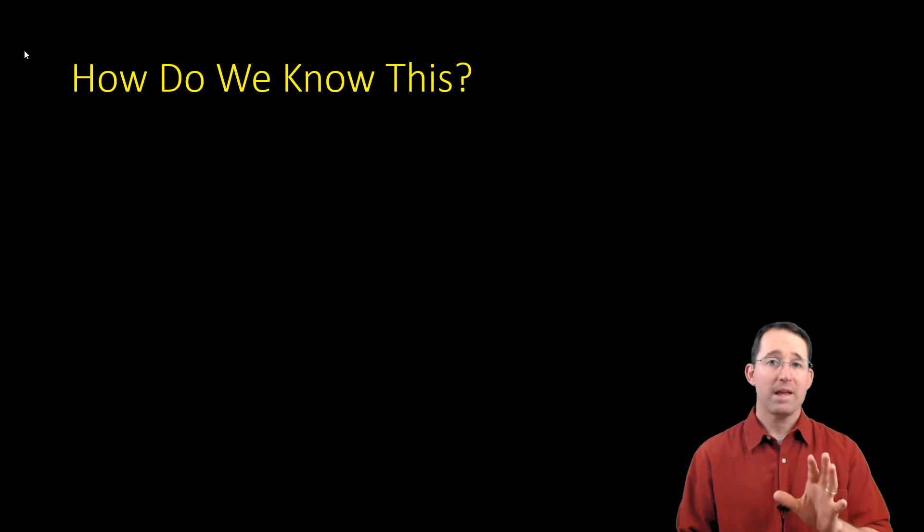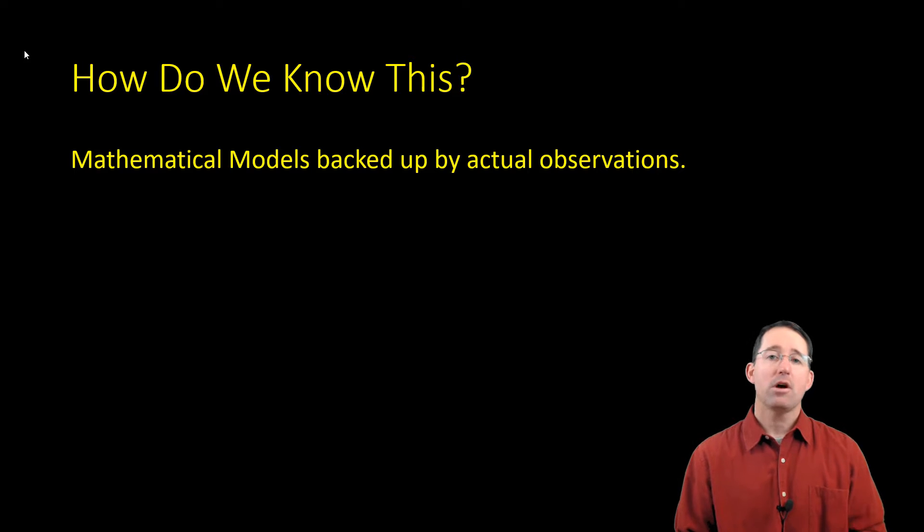Now, before we get too deep into all these things, how do we know these things? Again, we've never set foot there, even though we've recently sent probes. How do we know these things? It largely comes down to mathematical modeling. Scientists can use our understanding of nature from things that we are able to do here on Earth, and using those same equations, we can make pretty good predictions for what should be happening inside of other planets.